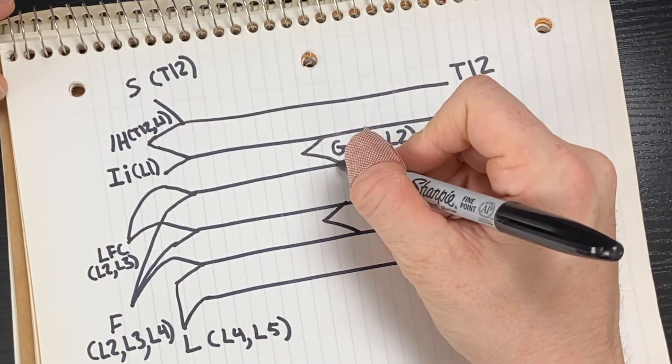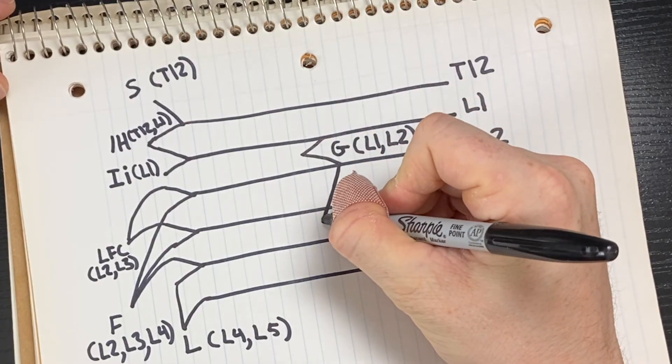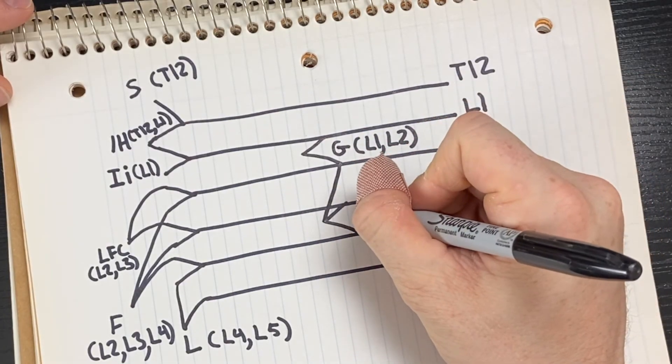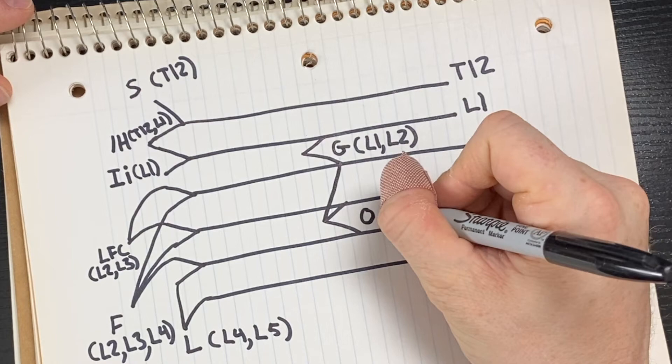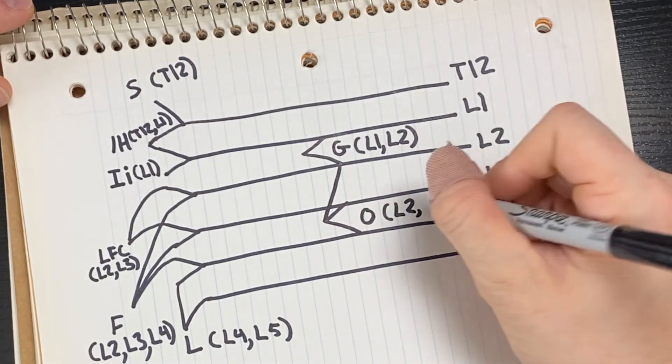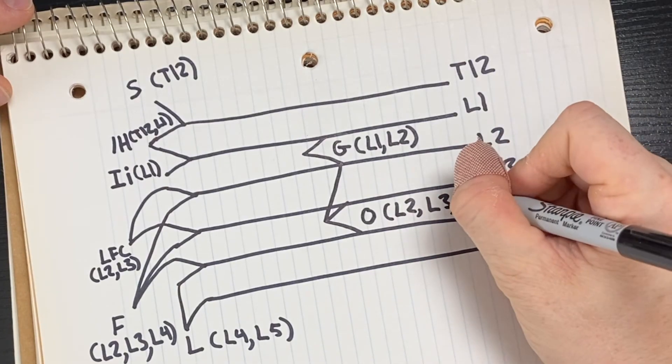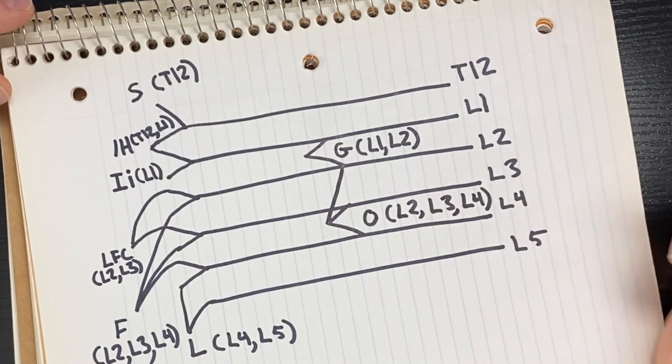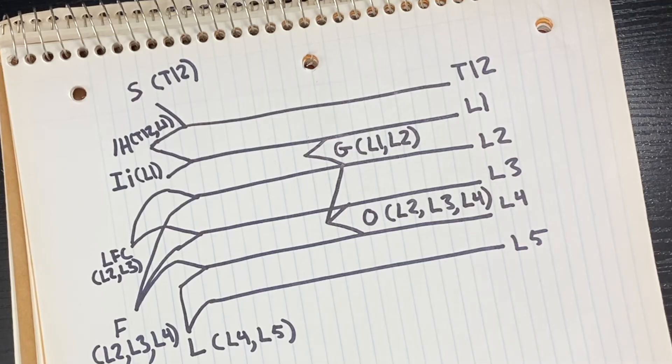And finally, the last thing we need to do is take a branch from L2 here, have this come on down right there, and this is going to be for the obturator nerve. And once you've written out the innervations for the obturator nerve, you've completed the lumbar plexus. If you're having trouble memorizing the nerves, there is an acronym I'll go ahead and post that in the description.